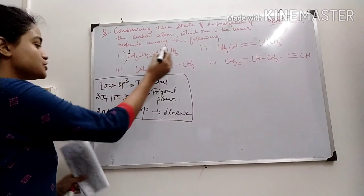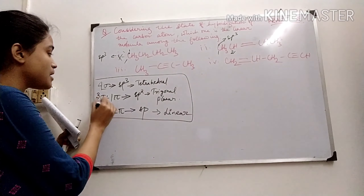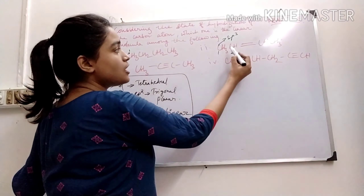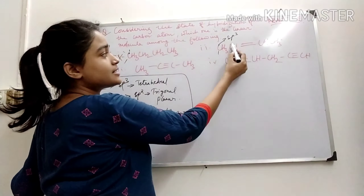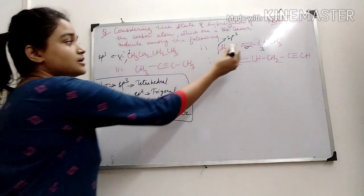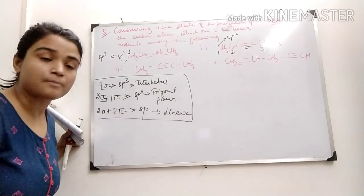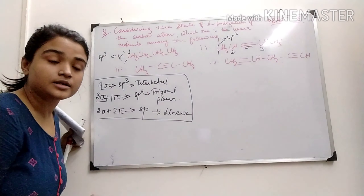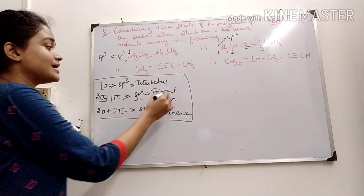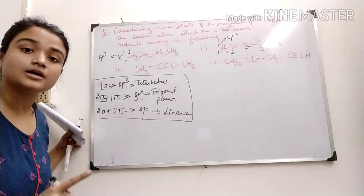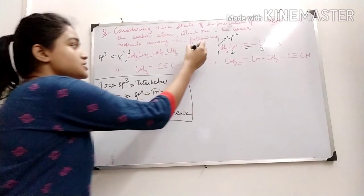For the second carbon in that molecule, there is 1 pi bond. The second carbon is attached to the first by a sigma bond, to the third carbon by a sigma bond, and to a hydrogen by a sigma bond — that gives 3 sigma bonds and 1 pi bond. So it is SP2, which is trigonal planar geometry. This option is wrong.